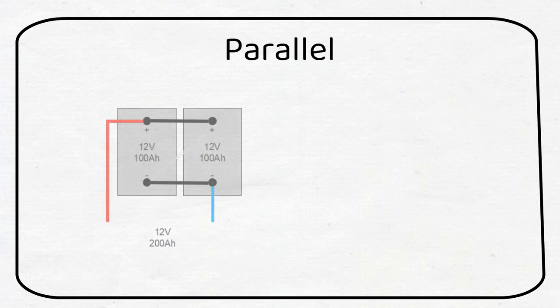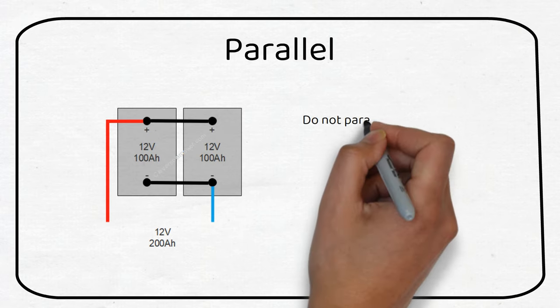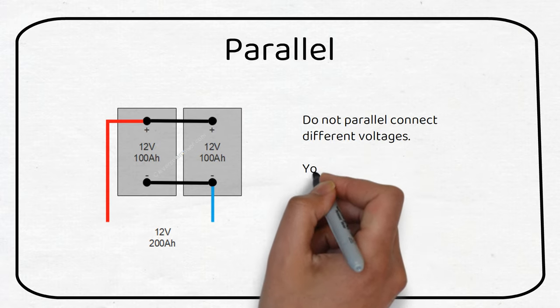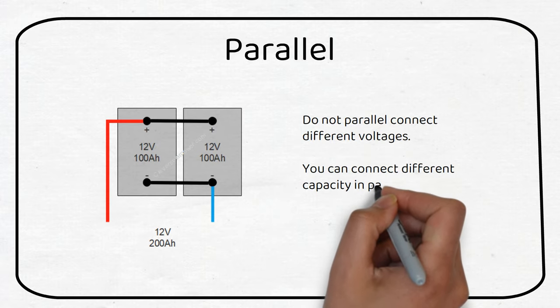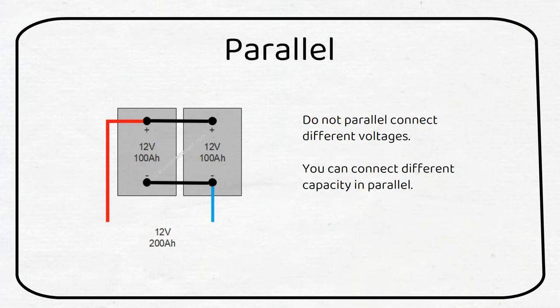If we wire our batteries in parallel, the capacity will increase while the voltage stays the same. If we take the same batteries we'll have 12 volts and 200 amp hours. Do not parallel connect different voltages. Different capacity batteries can be connected in parallel if they have the same chemistry.